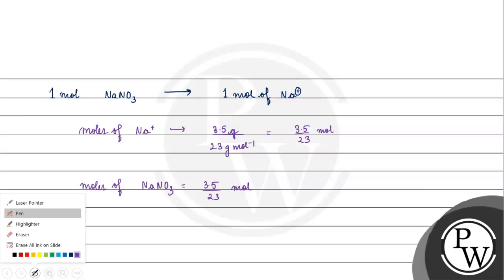Now if we want to remove mass of NaNO3, what will we do? We know that number of moles equals mass by molar mass.